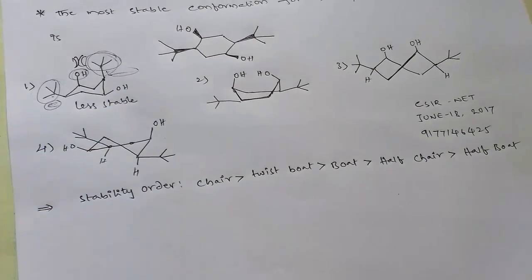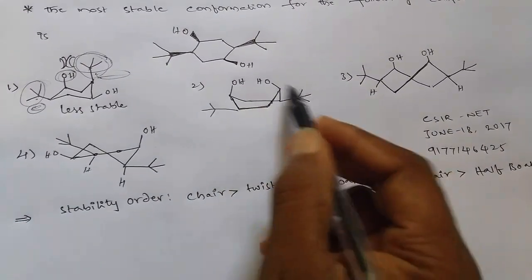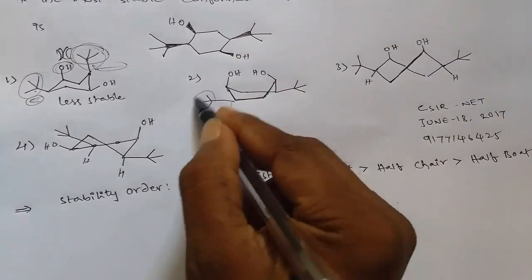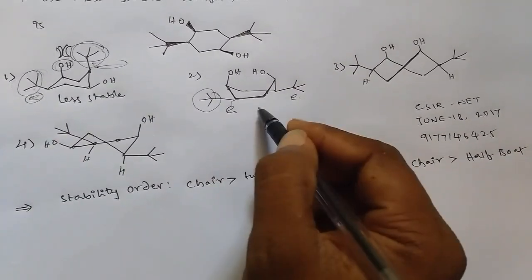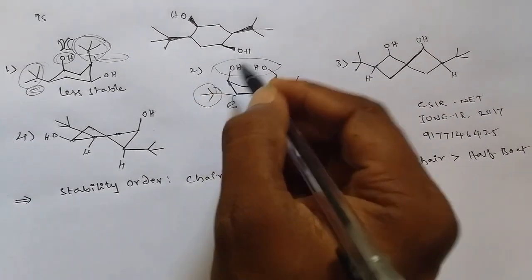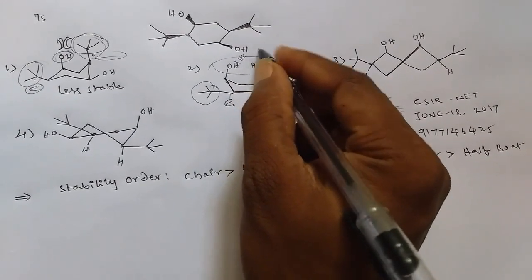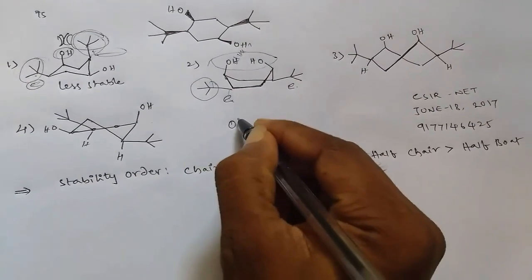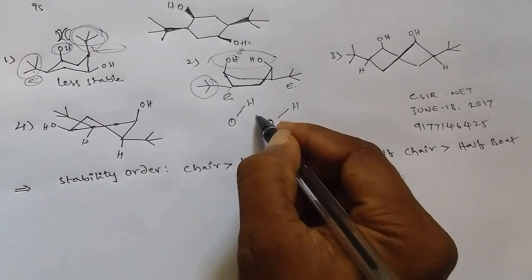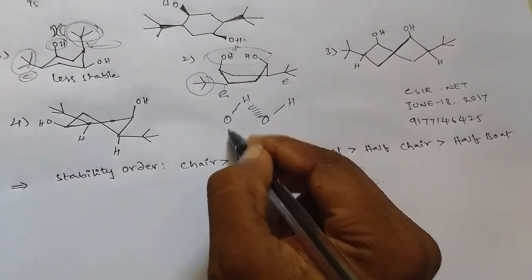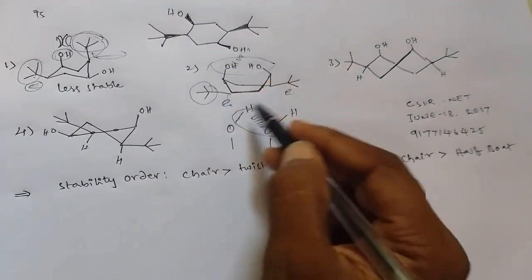Next, the second option is the boat form. In this boat structure, the bulky group is in the equatorial position and the other bulky group is also in the equatorial position, which is favorable. Additionally, if you observe the two OH groups, there is a chance of formation of hydrogen bonds, which helps stabilize this boat conformation.